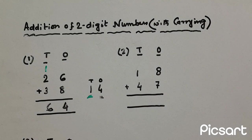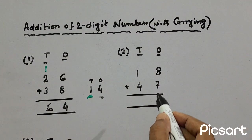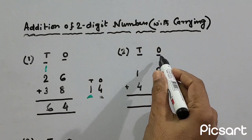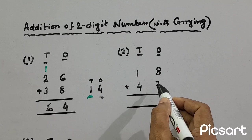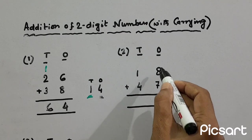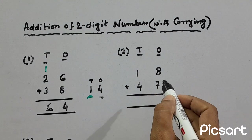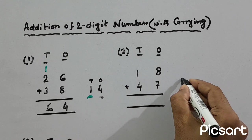In the same way, in the second case, we have to add one ten and eight ones with four tens and seven ones. So this ones column numbers we'll add first. So eight plus seven is 15.